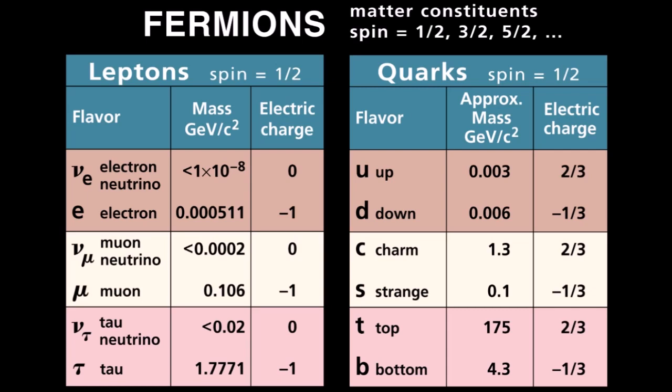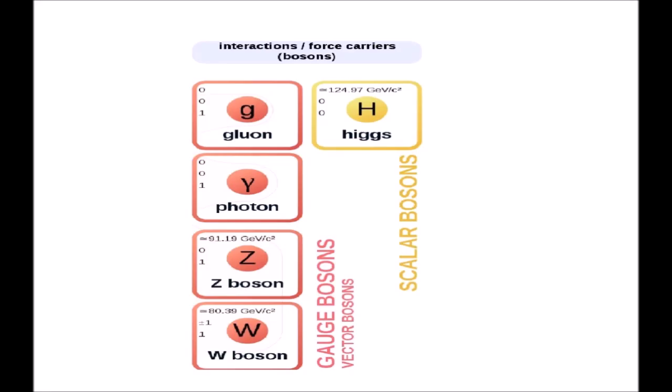Now we have the boson series. The boson series has 2 types: gauge boson and Higgs boson. The gauge boson has 4 particles: gluon, photon, Z boson, and W boson.